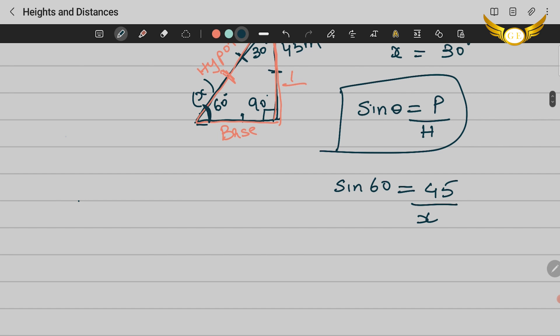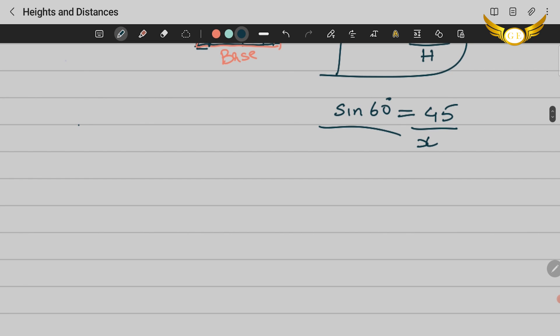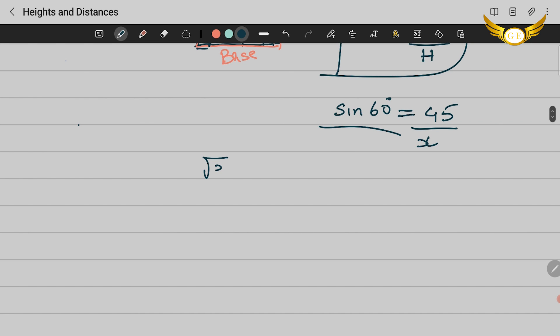So now we need to find the value for sin 60 degrees. Sin 60° is √3/2. We will substitute it: √3/2 = 45/x, which means x√3 = 45×2. So that becomes x = 90/√3.